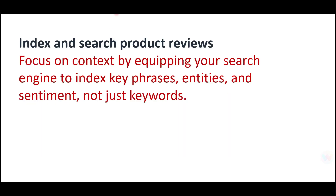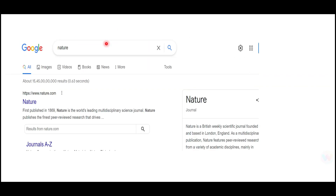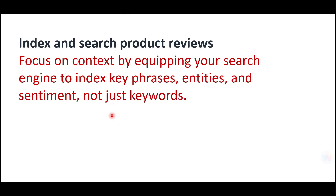The next use case is indexing and searching product reviews. For example, when you search on Google you type a keyword like 'nature' and get all listings, but it is not filtering by sentiment. With this software, you can search 'nature' combined with 'cruel' or 'happy' and so on — you can add sentiments to your search queries and retrieve results filtered by those sentiments.